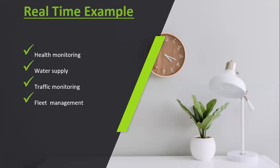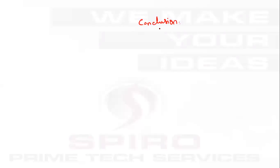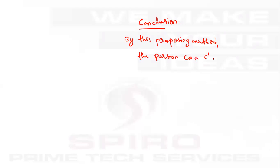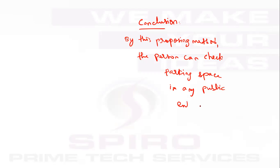Real time examples include parking slot availability checking and smart parking, and we can also apply this for traffic monitoring. In conclusion, by this proposed method, the person can check for parking space availability in any public entertainment places. Thank you.